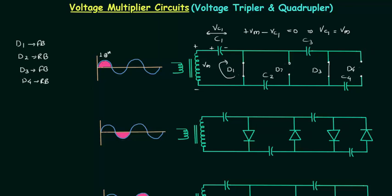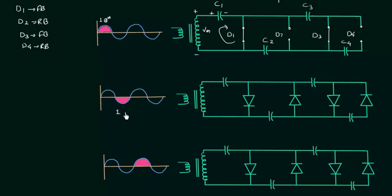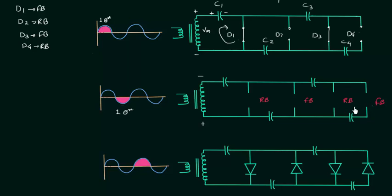Now we will move to the first negative half cycle. In this cycle, diode D1 is reverse biased, diode D2 is forward biased, diode D3 is reverse biased, and diode D4 is forward biased, because the polarity of input is minus-plus. D1 and D3 are replaced by open circuits, while D2 and D4 are replaced by short circuits.